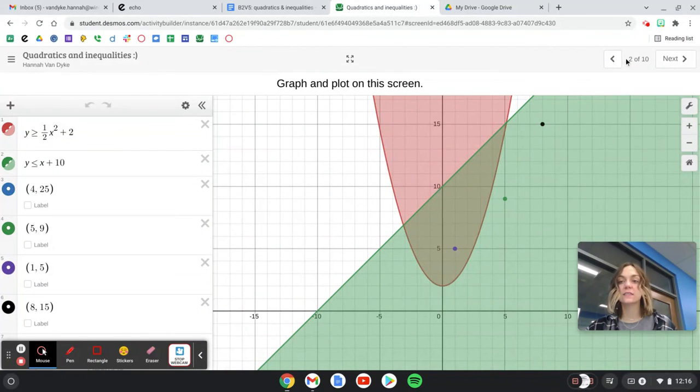So this is screen 2 of 10. That's how I know it's screen 2. I would take a screenshot of this and upload it to the document. Once you're done with all three, go ahead and submit to Echo.